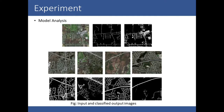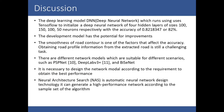These are some input and classified output images. The RGB images are the inputs given to the model, and the model correctly predicted the output images shown as black and white masks. For the DNN, we trained the model using TensorFlow to create a deep neural network of four hidden layers of sizes 100, 150, and 150 neurons respectively, achieving an accuracy of 82%.